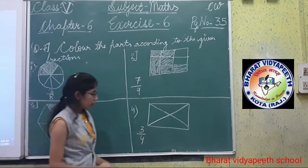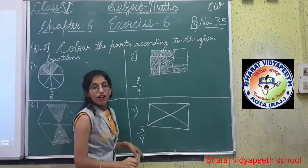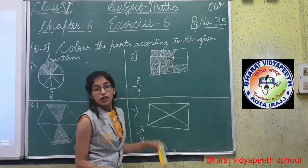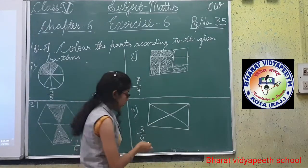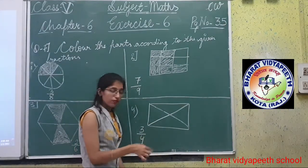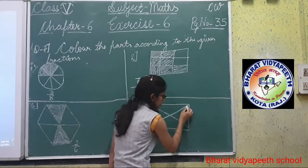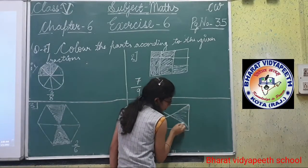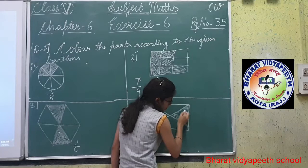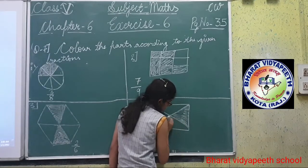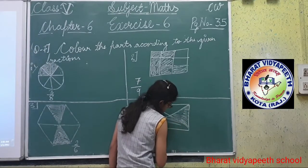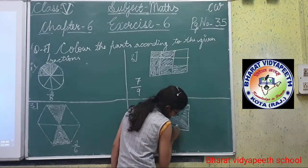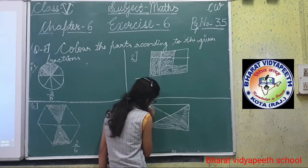Now see the fourth one: 3 by 4. Total number of parts: 4 — 1, 2, 3, 4. Shaded part: 3. We shade 3 parts: 1, 2, 3. Clear?